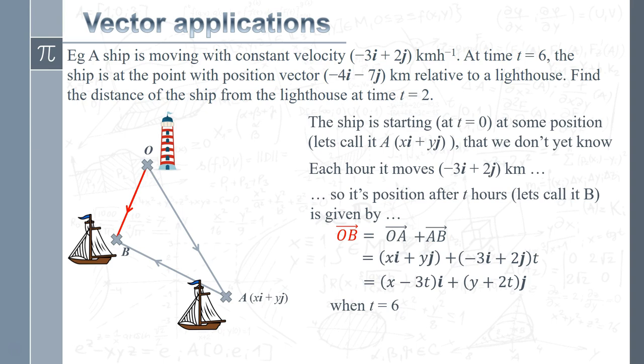And I also know that when t equals 6, because I'm given that in the question, at the time t equals 6, the position vector is there, minus 4i minus 7j. So let's plug in that piece of information. So we've got OB minus 4i minus 7j. t is 6. So plug those in. You can see what's going on there. And so what we've got is those two vectors there have got to be the same.